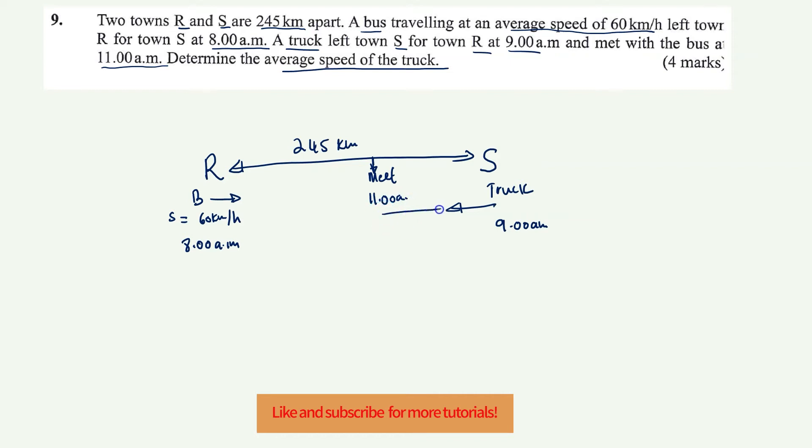So this truck has travelled up to this point with the time of two hours. So we've got time. So from S to meeting point is two hours. And now we need to find the speed of the truck.